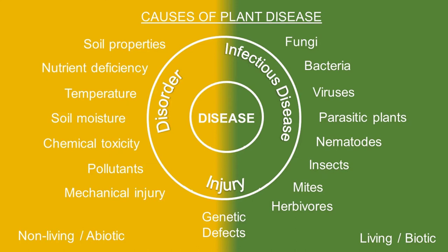In this diagram we have a variety of causes of plant diseases. We have infectious diseases which are caused by fungi, bacteria, viruses, parasitic plants, and nematodes. Then we have injury that's caused by insects, mites, herbivores, genetic defects, and mechanical injury.